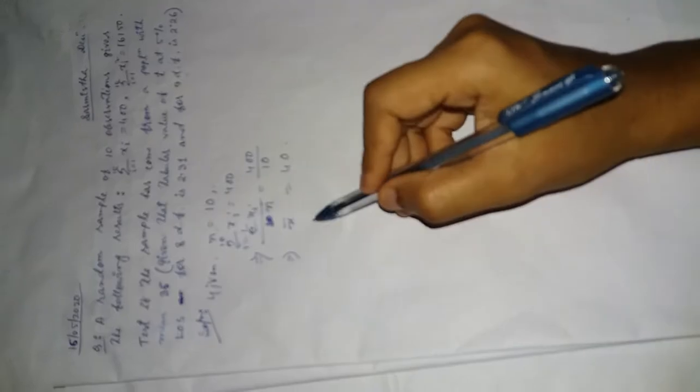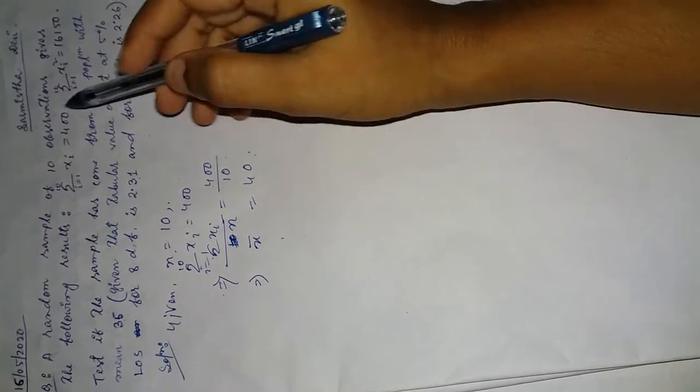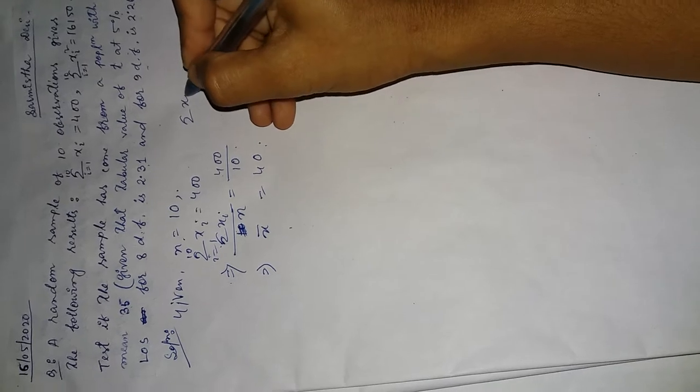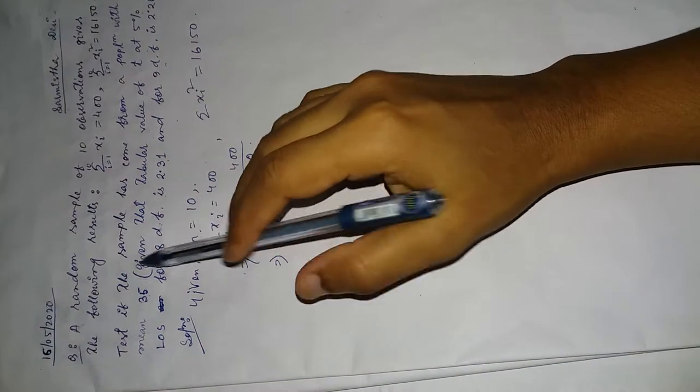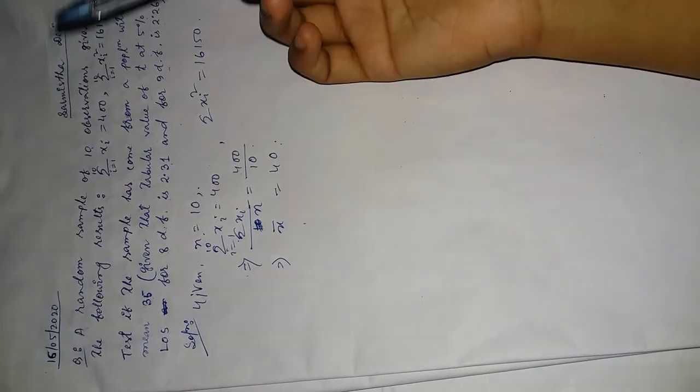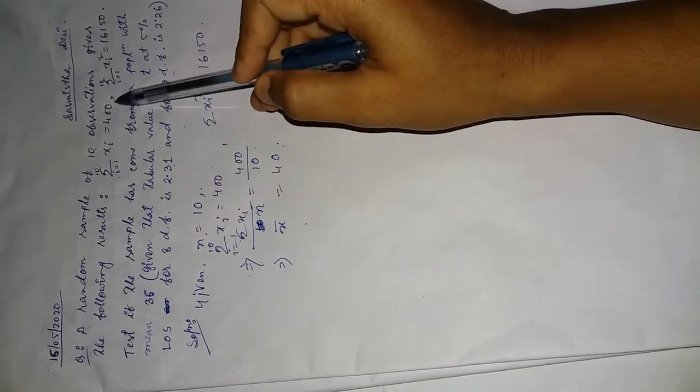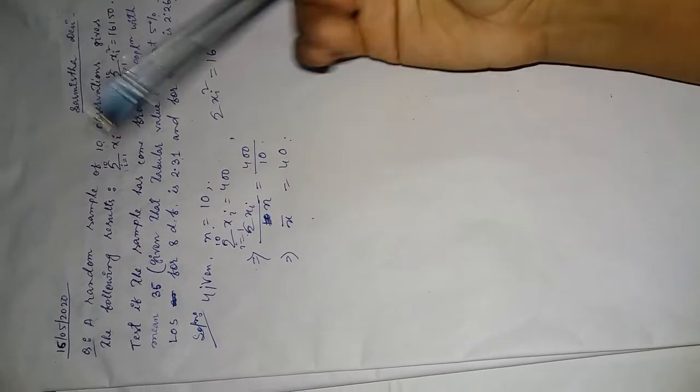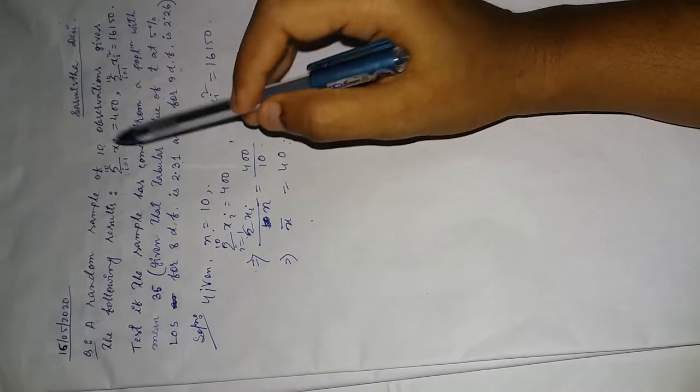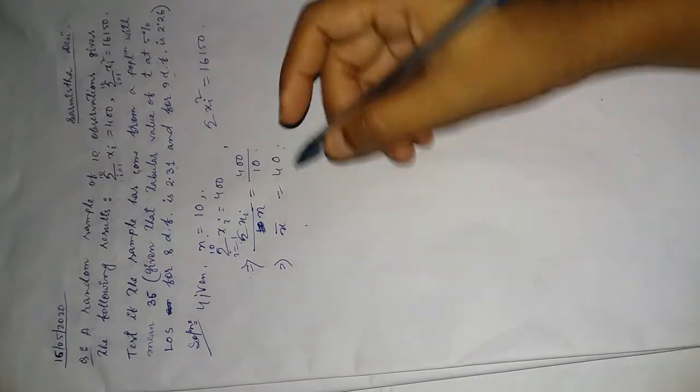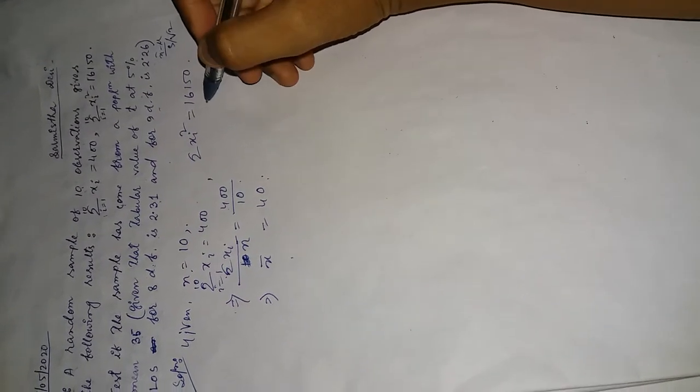Again, summation xi square is equal to 16150. It is a small sample test for single mean. We need x bar minus mu divided by s by root n. Since the data is given, we need to calculate s squared.